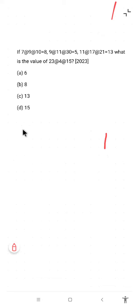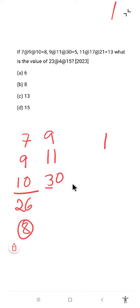Let's try first by replacing it with plus. 7 plus 9 plus 10, addition of all these numbers is 26, 2 plus 6 is 8. 9 plus 11 plus 30, sum of this number is 50, 5 plus 0 is 5.